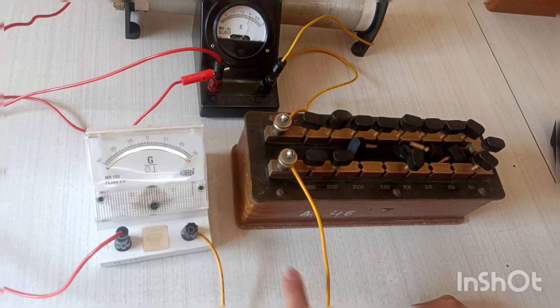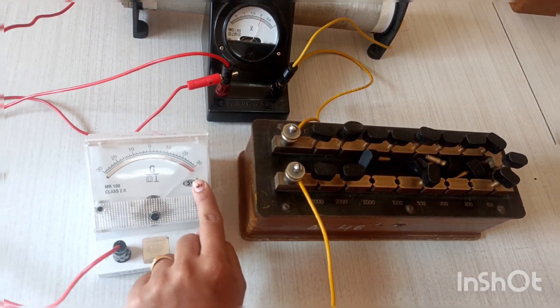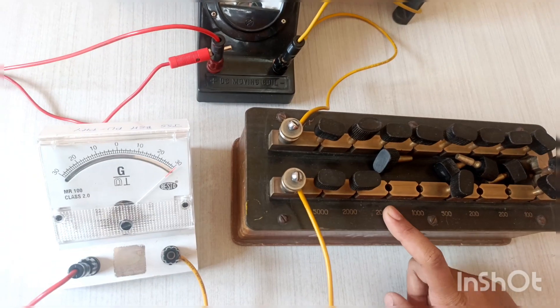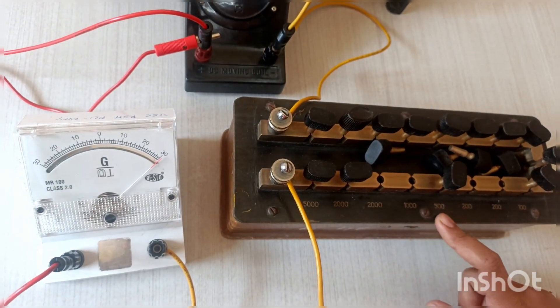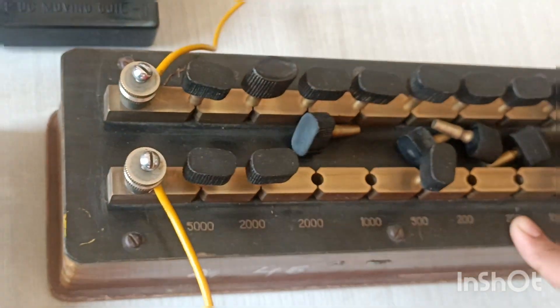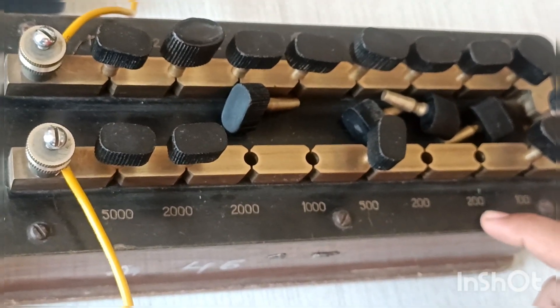As we observed, galvanometer is not showing the 30. To make it as 30 divisions, change the resistance value. Instead of 3279, it changes to 3400 ohms. This 3400 will be the practical R value.